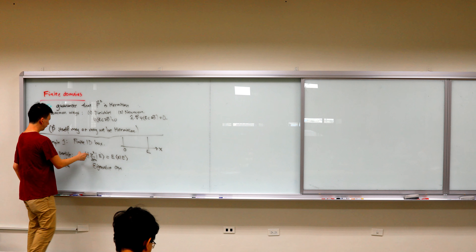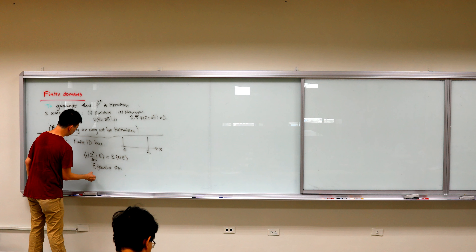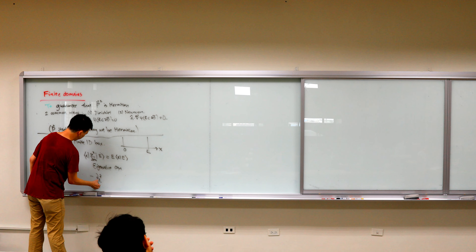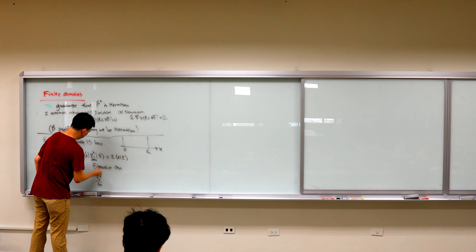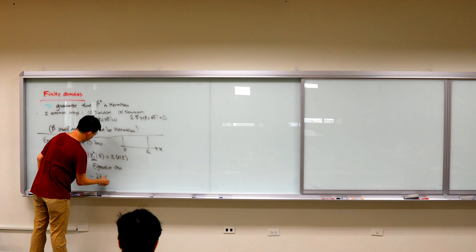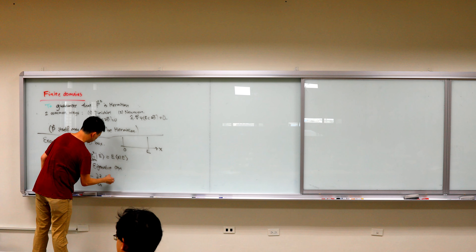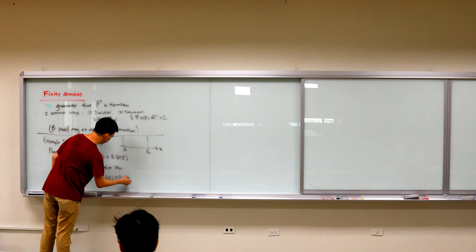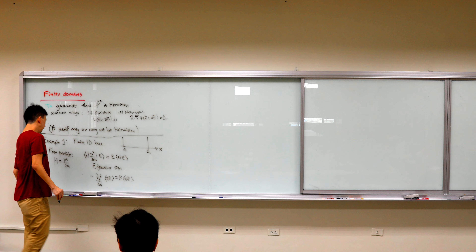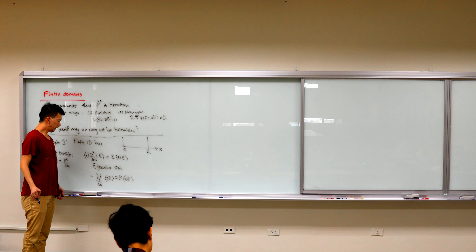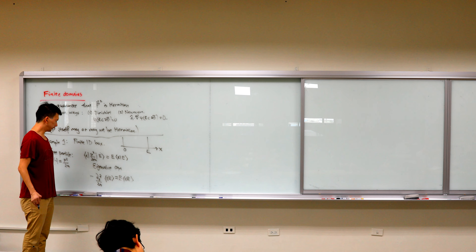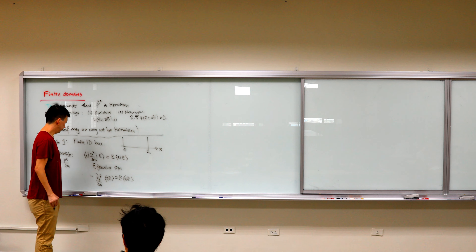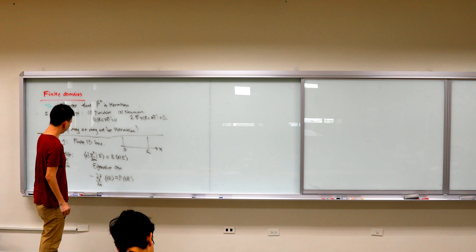p squared goes to minus the partial derivative squared over 2M acting on your wave function psi(x,E), which equals E times psi(x,E). And so in one dimension you can see that this is just a second order ordinary differential equation, because it's in 1D.